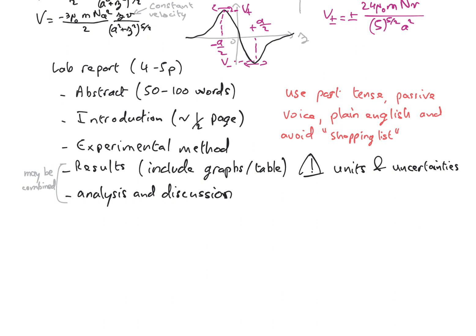The analysis and discussion section can be combined with the results section or be a separate section. This is where you discuss your main results and whether they agree with the background theory you discussed in the introduction. This is also where you will discuss any interesting or surprising results you didn't expect, and where you will compare your results with previous measurements or accepted values, and discuss how the experiment could be improved.